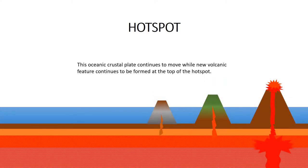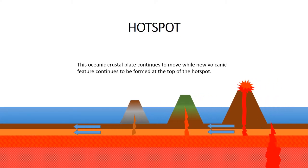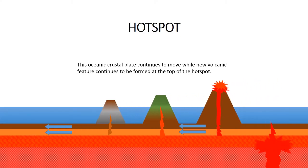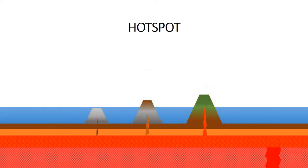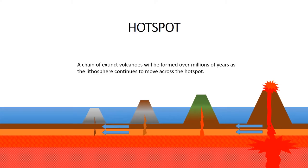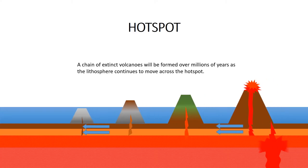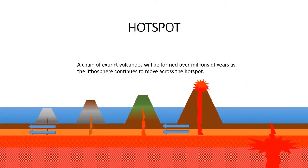This oceanic crustal plate continues to move while new volcanic features continue to be formed at the top of the hot spot. A chain of extinct volcanoes will be formed over millions of years as the lithosphere continues to move across the hot spot.